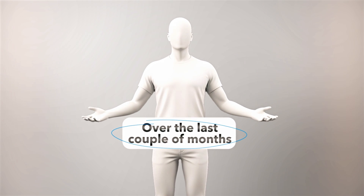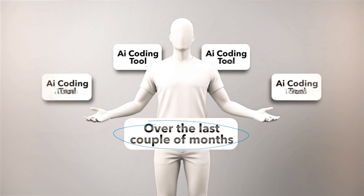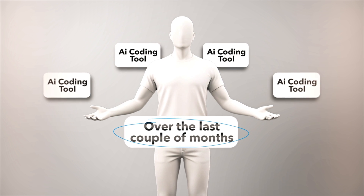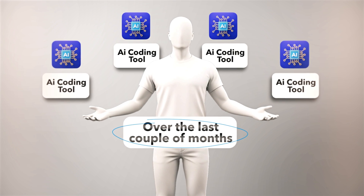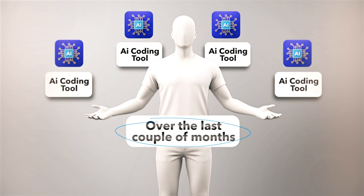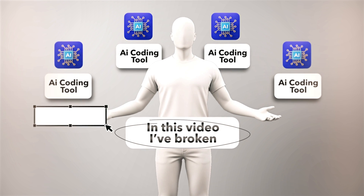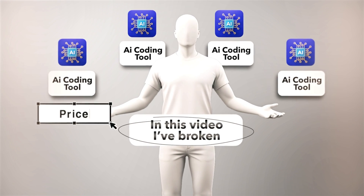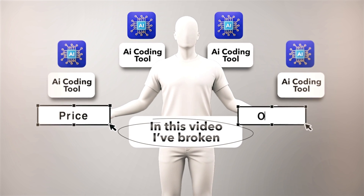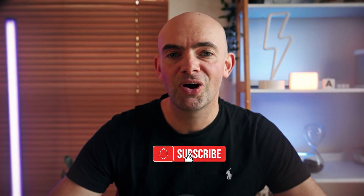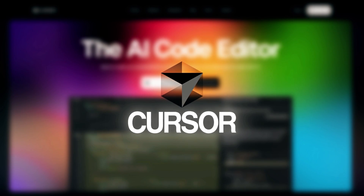Over the last couple of months I've been diving into every single AI coding tool out there, as well as all of the different new AI coding models. In this video I've broken each of them down looking at things like price, ease to start, and most importantly the actual output at the end. Make sure you stick around to the end to find out what I use and what I've been building — and hit that subscribe button before we jump into the first tool on our list, which is Cursor AI.